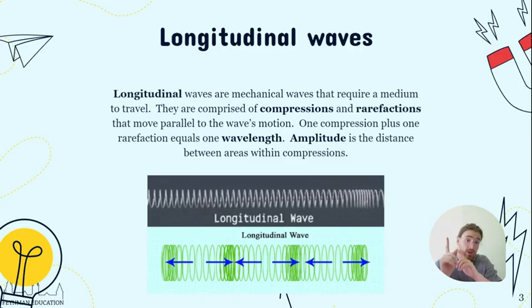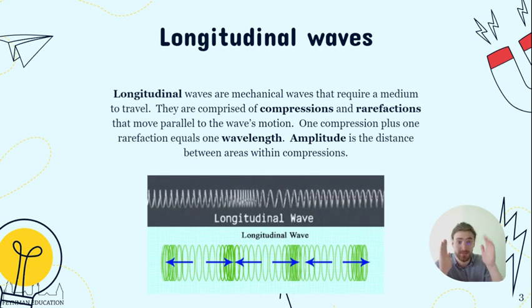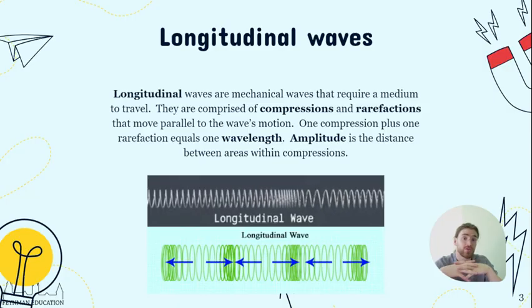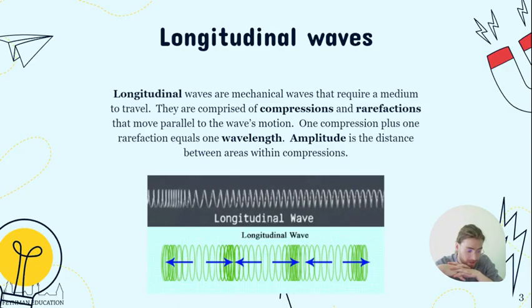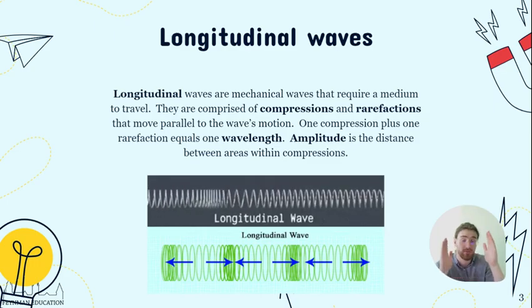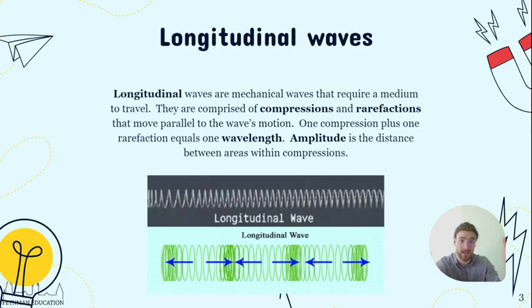One compression or the distance between one compression and one rarefaction is equal to the wavelength. The amplitude is going to be the distance between areas of compression. Depending on how big the amplitude is, that distance between compressions is going to be bigger, but one wavelength is going to be between a compression and a rarefaction, kind of like saying one cycle of the wave.